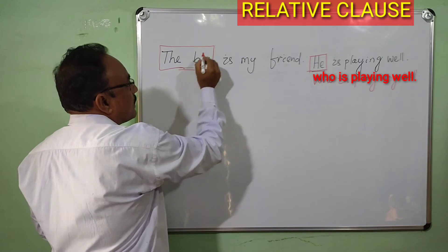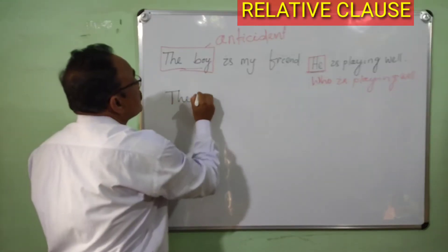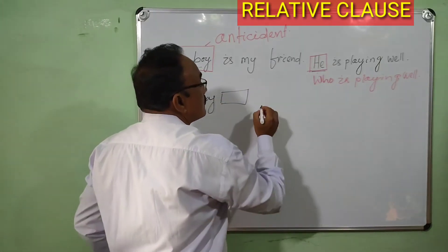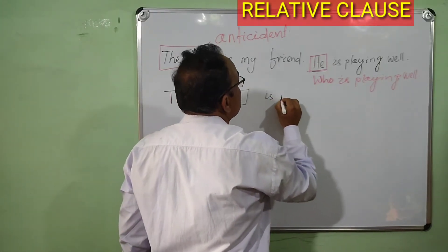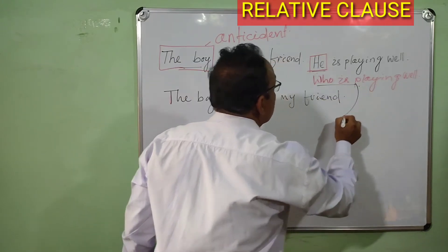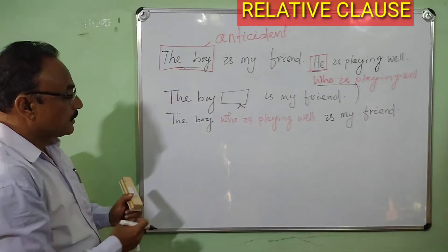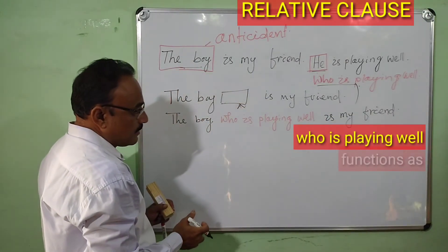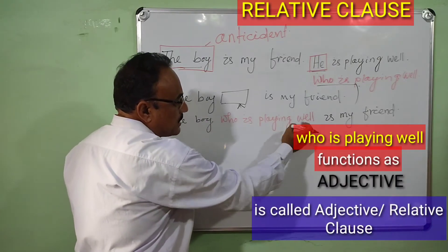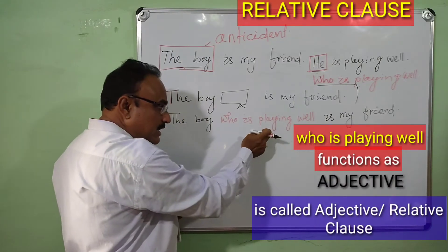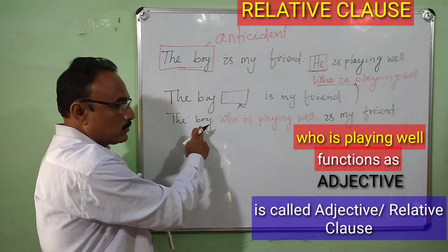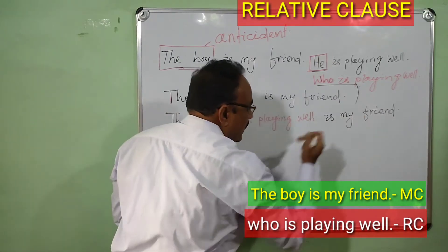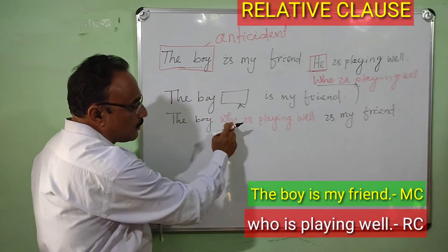The boy is the antecedent. The two sentences combine to form: 'The boy who is playing well is my friend.' Here, 'who is playing well' is the relative clause — that is the adjective clause — and it functions to modify the noun. The main clause is 'the boy is my friend,' and the relative clause is 'who is playing well.'